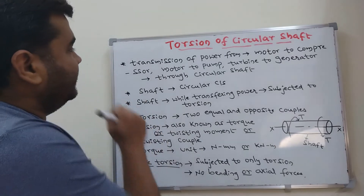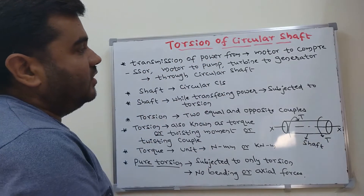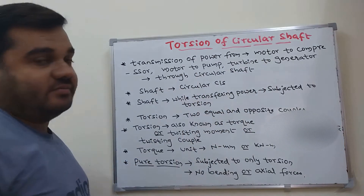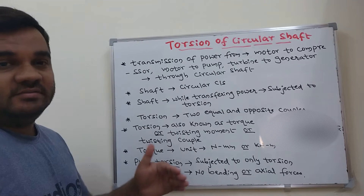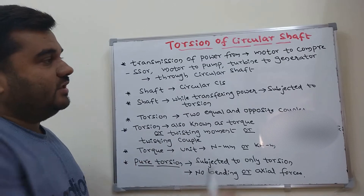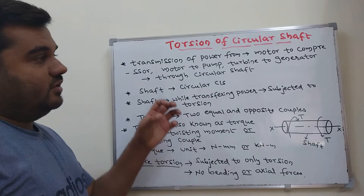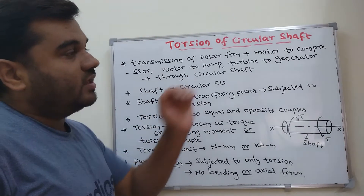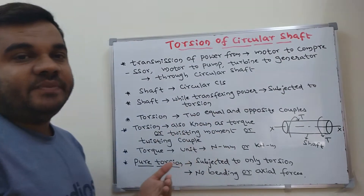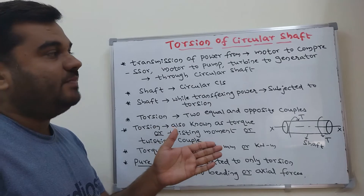The first point is the transmission of power from motor to compressor, motor to pump, and turbine to generator through a circular shaft. In mechanical discipline, we need to transfer power from one component to another. For example, motor to compressor — the compressor is a mechanical component in which high pressure fluid is generated; the output is high pressure fluid, almost in gaseous form.